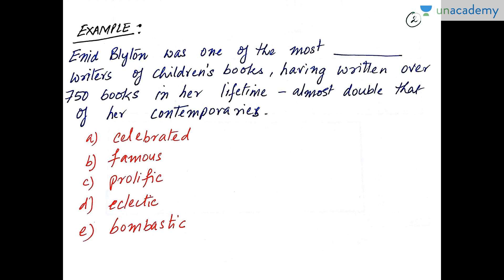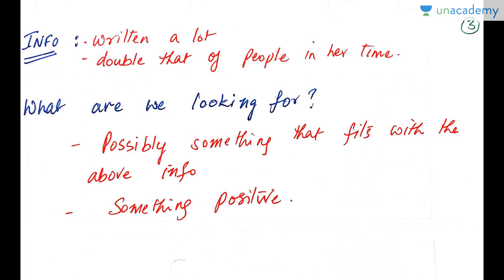Let us pick up the first example of this series. 'Enid Blyton was one of the [blank] writers of children's books, having written over 750 books in her lifetime, almost double that of her contemporaries.' The choices are: celebrated, famous, prolific, eclectic, and bombastic. Now start analysing this sentence. What information do you glean from it? One, Enid Blyton has written a lot of books. Two, the number of books she has written is almost double that of people in her times. So we are looking for something that fits this information and definitely something with a positive connotation.